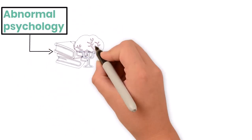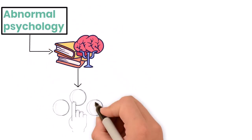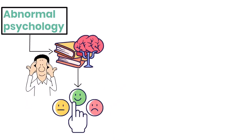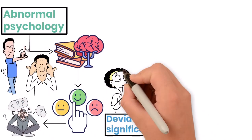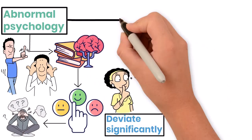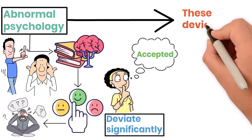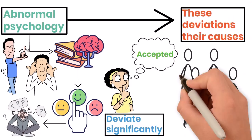Abnormal psychology is the branch of psychology that deals with the study of unusual patterns of behavior, emotion, and thought. These patterns may not necessarily indicate a mental disorder, but they deviate significantly from what is considered typical or culturally accepted. The goal of abnormal psychology is to understand these deviations, their causes, and their effects on individuals and society.